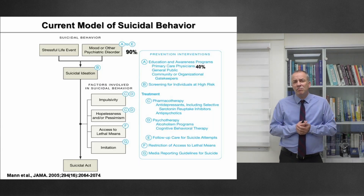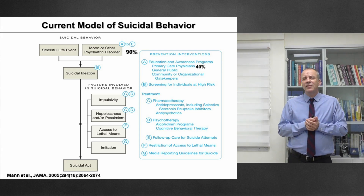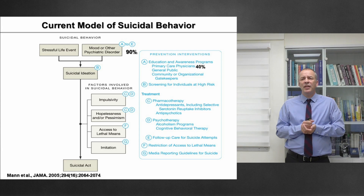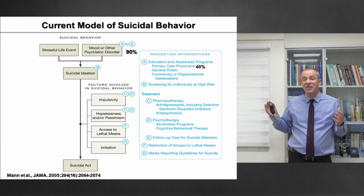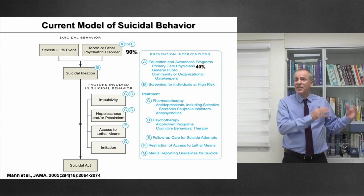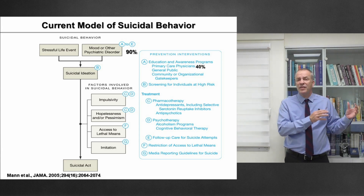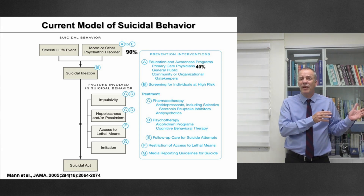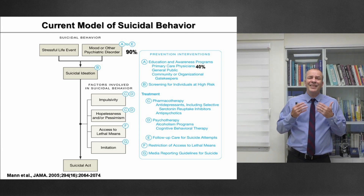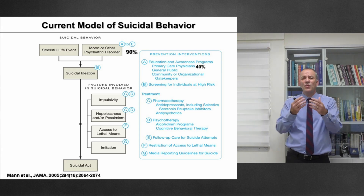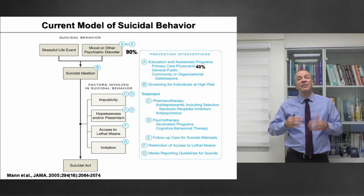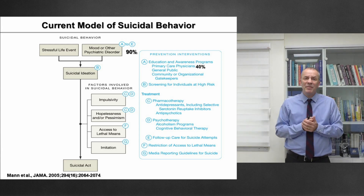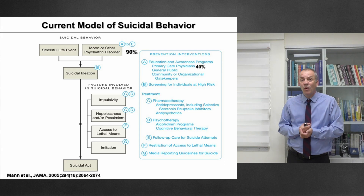The most common model for suicide was published in JAMA in 2005 by John Mann, describing the combination of mood disorder or other psychopathology in 90% of cases, plus stressful life events such as humiliation, separation, or loss, which together create suicide ideation. To move from ideation to a suicide act, you need intervening factors such as impulsivity or impulsive-aggressive personality, hopelessness, pessimism, access to lethal means, or imitation.